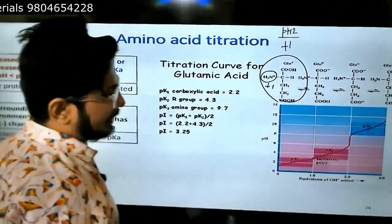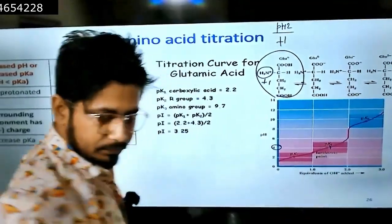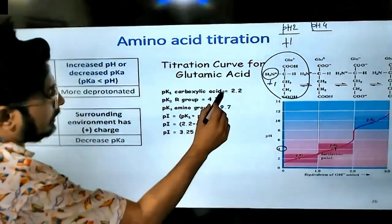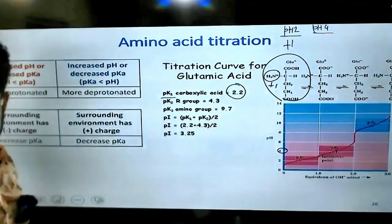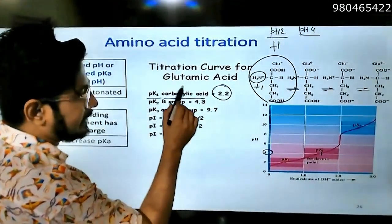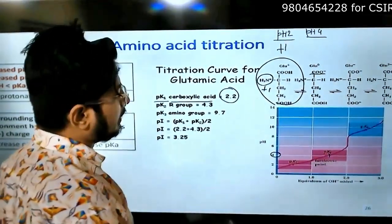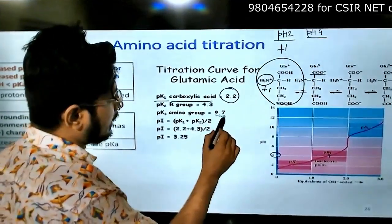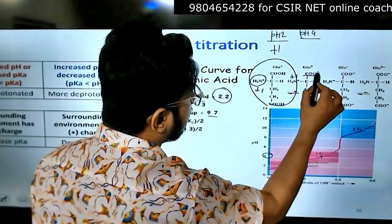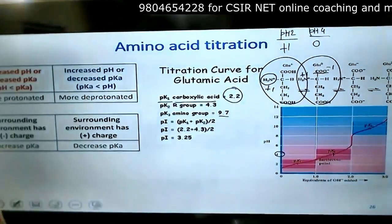Let's increase the pH to pH 4. This pKa value 2.2 is less than pH 4. So it will be deprotonation here. Deprotonation from the carboxylic acid. 4.3 is more than 4, no deprotonation. 9.7 no deprotonation. So only one deprotonation. Plus 1 was there, minus 1 here. So net charge is zero.